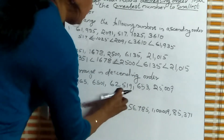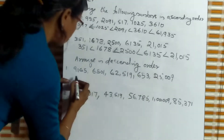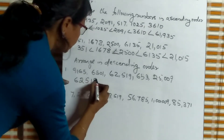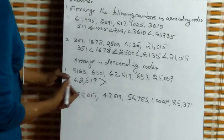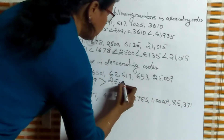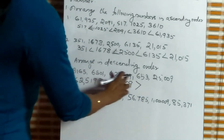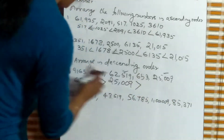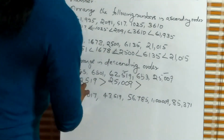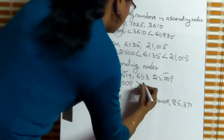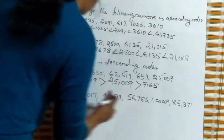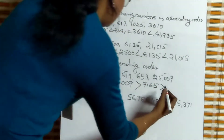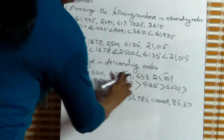This is also a five-digit number. Among the five-digit numbers, 62,519 has 62 in the leading digits, making it the greatest number. Greater than. Next greatest is 25,009. Next one is 9,165. Next number is 6,501. And the least number is 653.